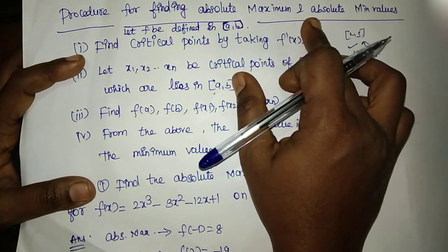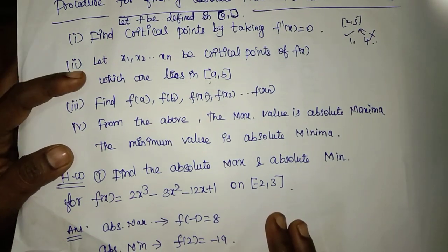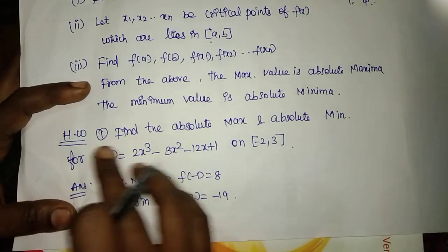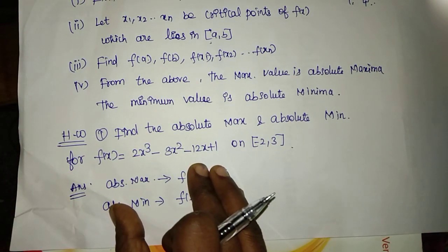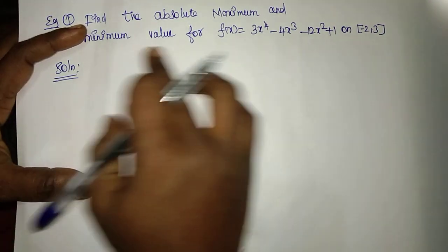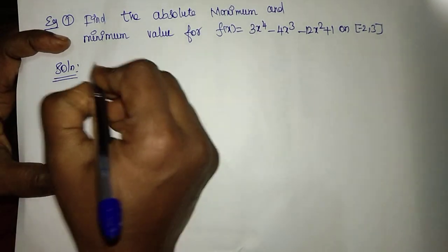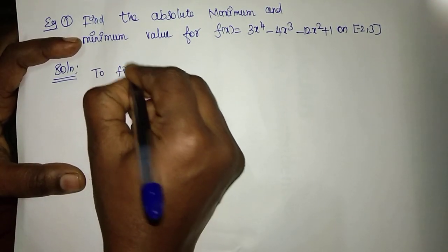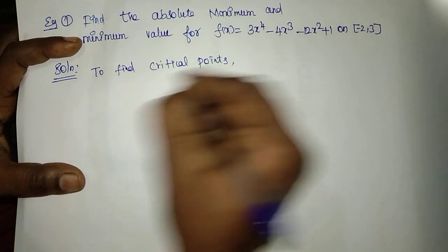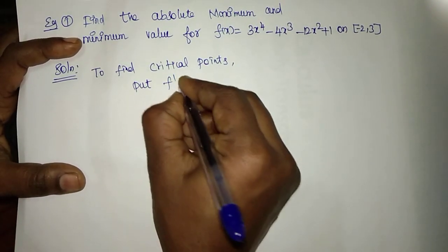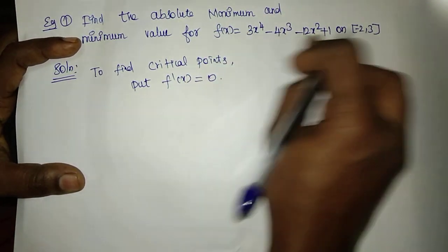Absolute maximum and absolute minimum — this is a university exam question, suppose worth 8 marks. This is a simple example showing the answer for this model. To find the absolute maximum value and absolute minimum value, we first find the critical points by putting F prime of X equal to 0. This is the given F of X.